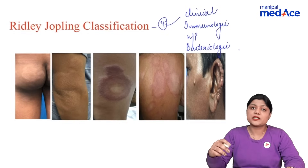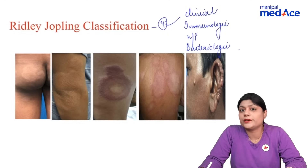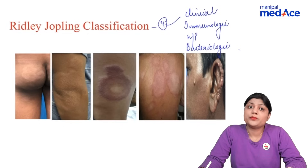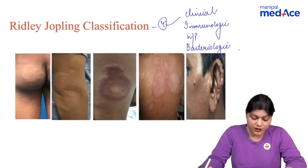Based upon this classification, we have five types of leprosy from the tubercoloid to the lepromatous pole. Pure neuritic and indeterminate leprosy are not a part of this classification.